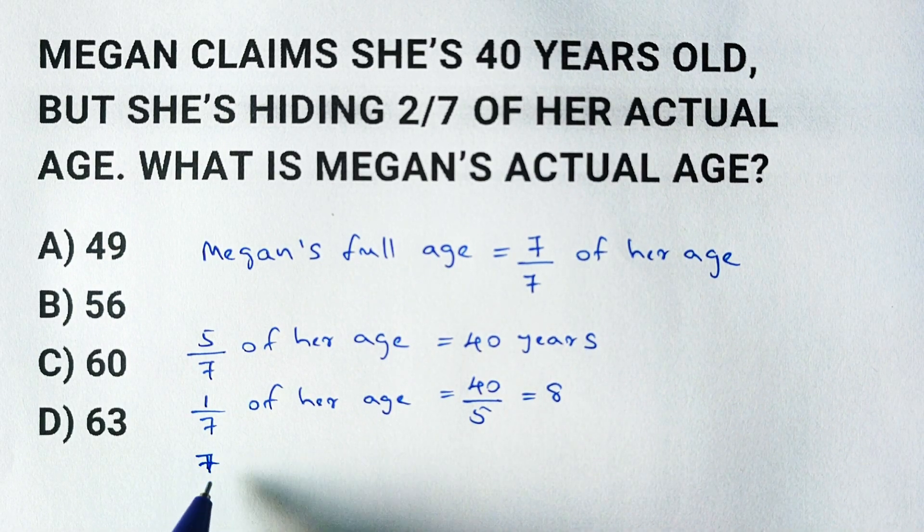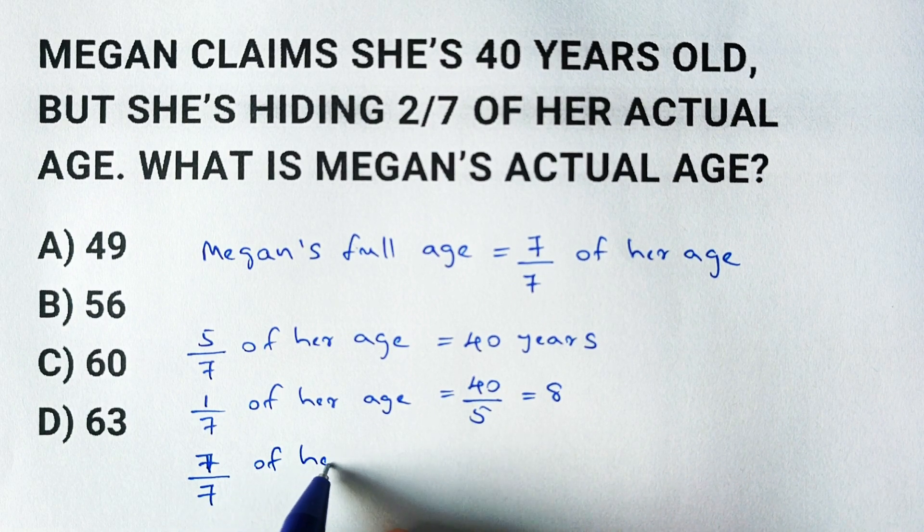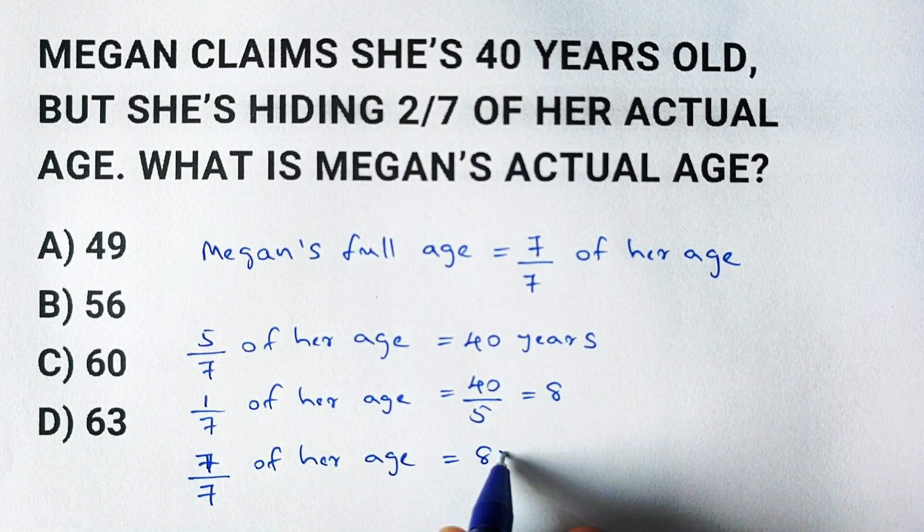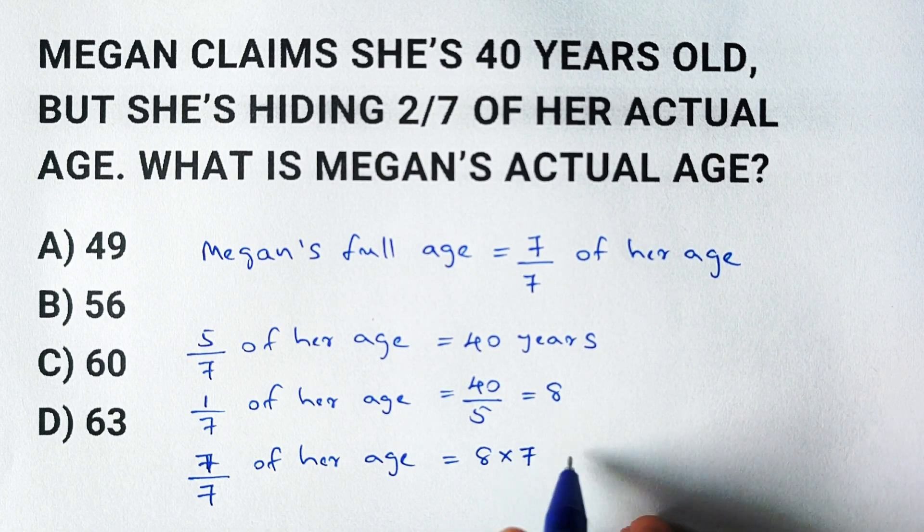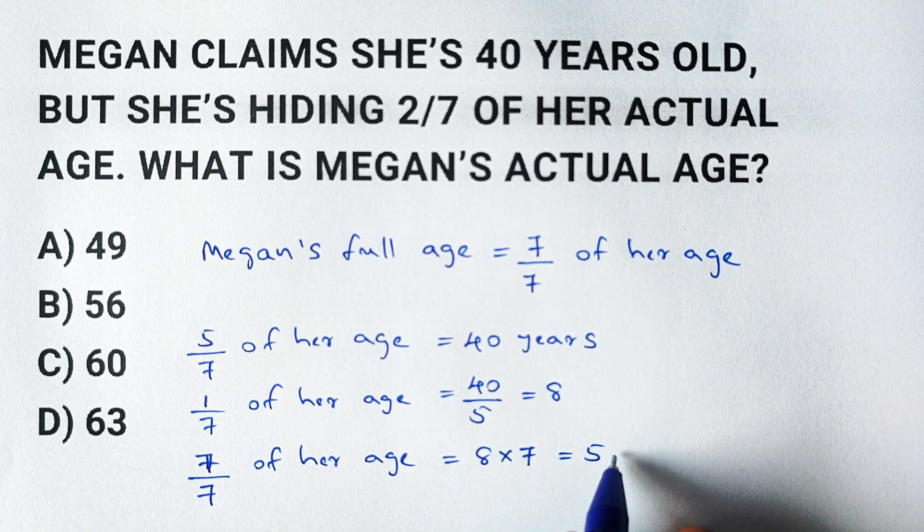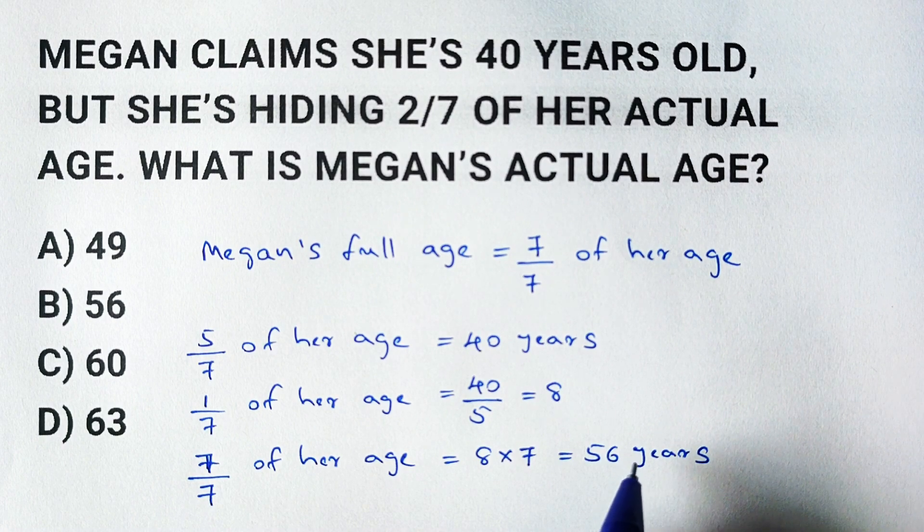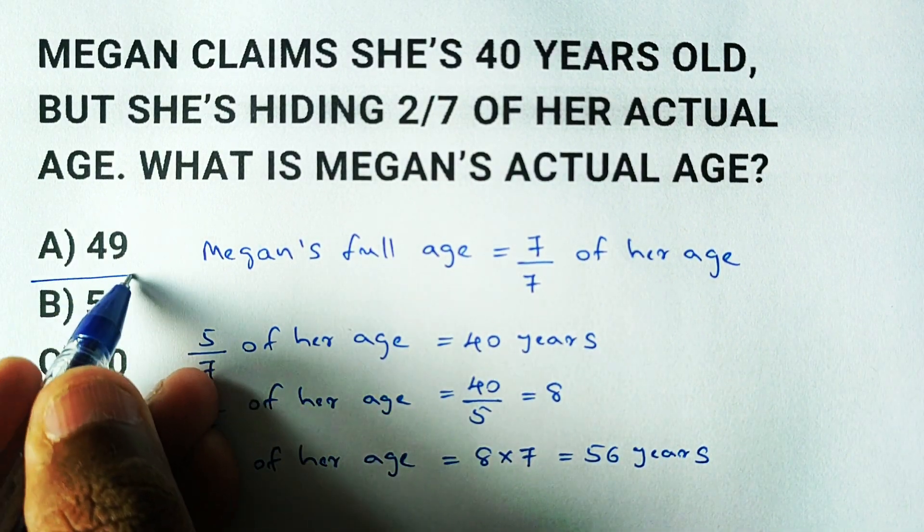Now that we know what one seventh of her age is, we can easily find her full age by multiplying 8 by 7. That gives us 56. So Megan's actual age is 56 years old. The correct answer is B: 56.